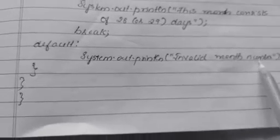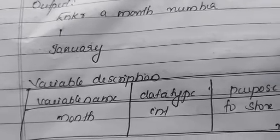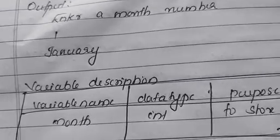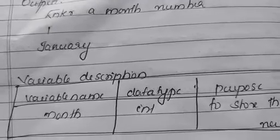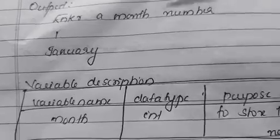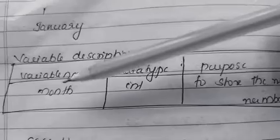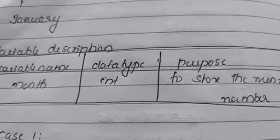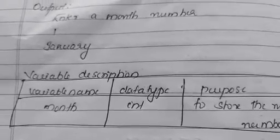Close the switch, close the main method, and close the class. The output: if you enter month number 1, case 1 matches and 'This month consists of 31 days' is printed. If you enter 30, the default case executes and 'Invalid month number' is printed. The variable description table has one variable: month, data type int, purpose is to store the month number. Switch case is also known as a menu driven program and multiple branching statement.